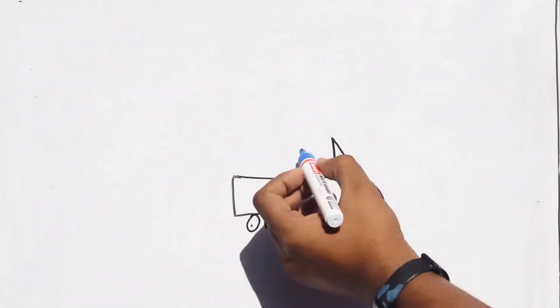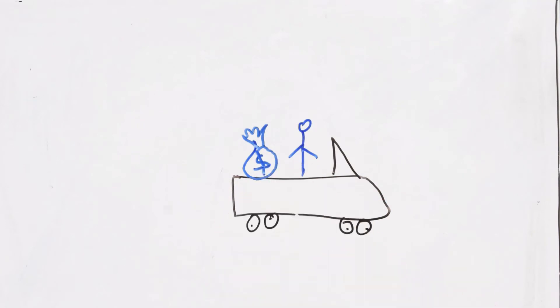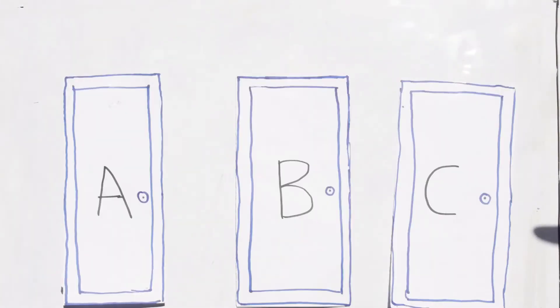He asks you to guess the door to the million dollars, and if you choose right you can take the money home with you. Now you choose a door.